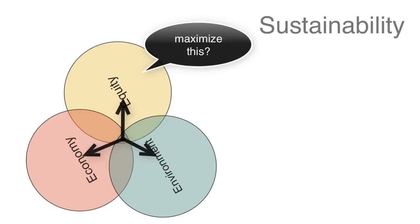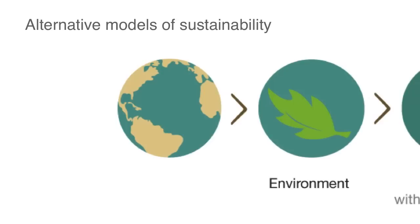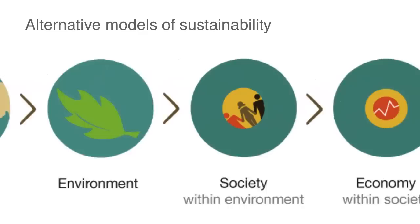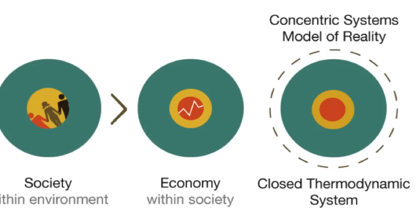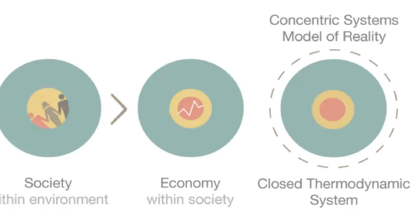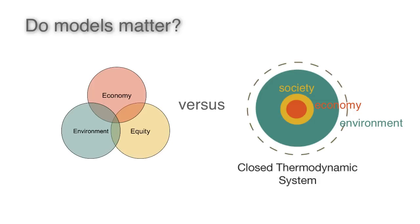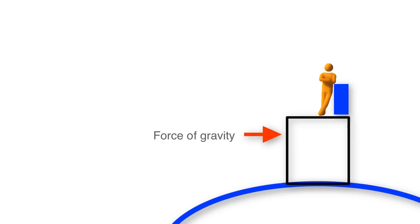An alternative model considers the physical relationship between the three. There is one environment that we all share. All of society resides within this environment, and all economic activity takes place within the human system of society. In this model it becomes clear that the health of each one is dependent upon the health of the other. Models have a powerful influence on how we think — consider what it would be like if we drew the force of gravity pointing away from the center of the earth. How would this inaccurate model influence our decisions?